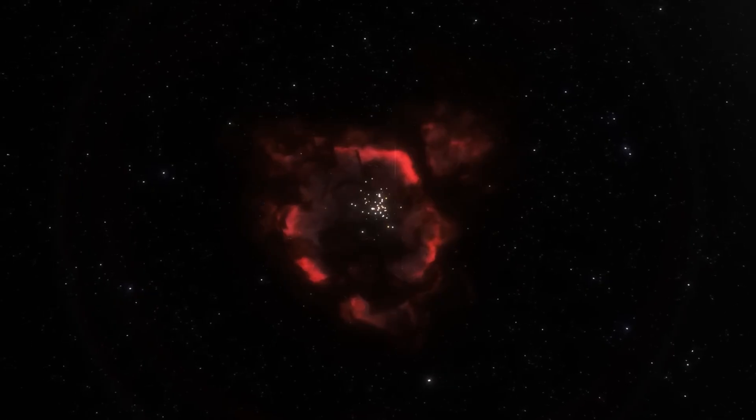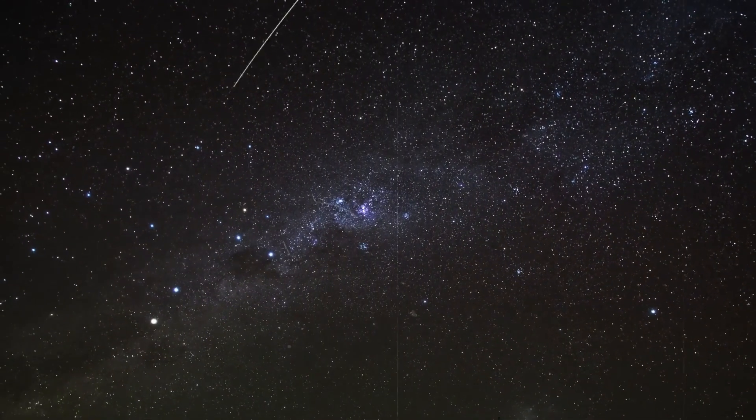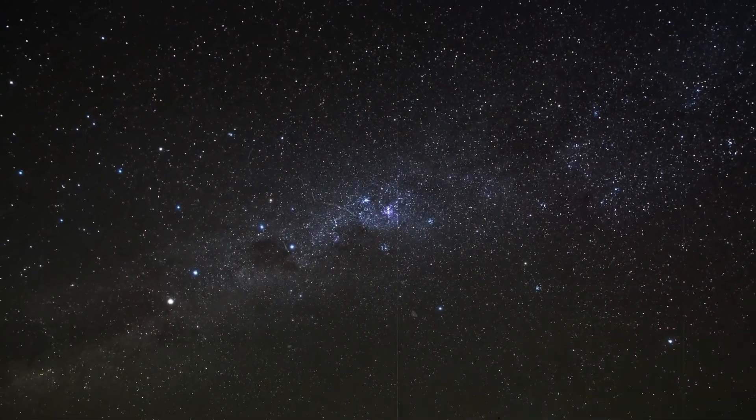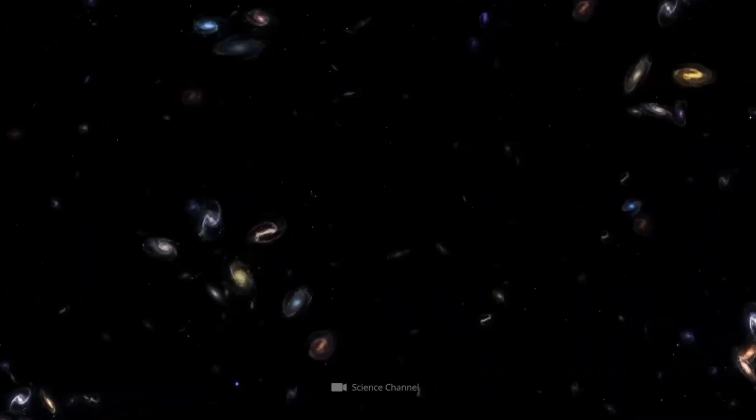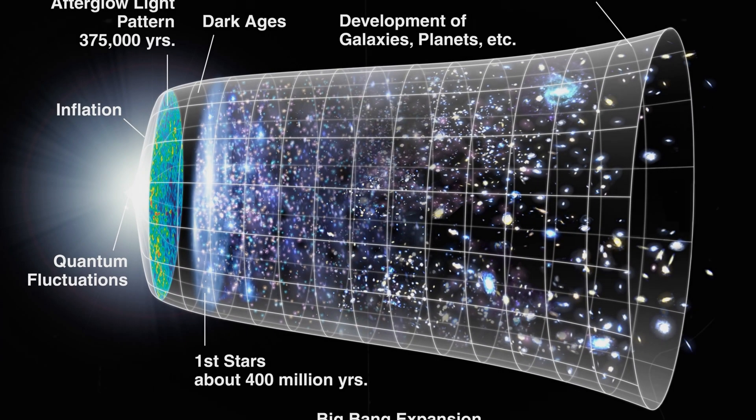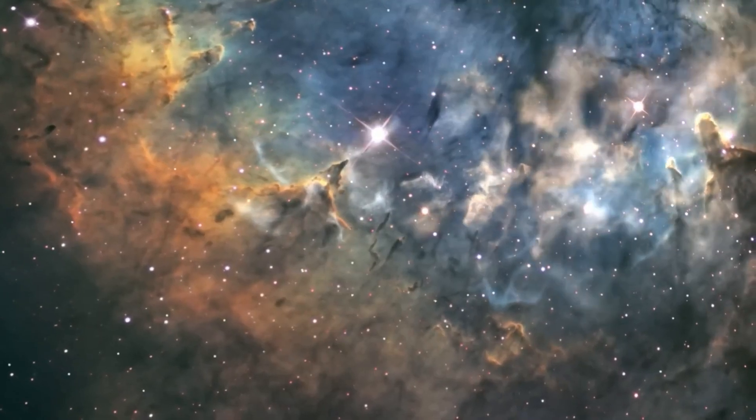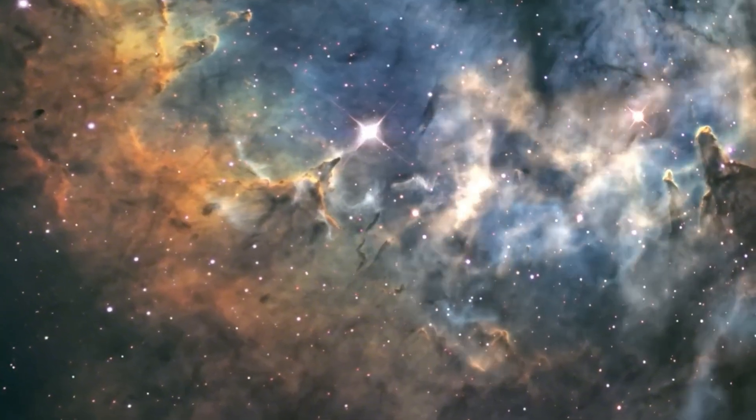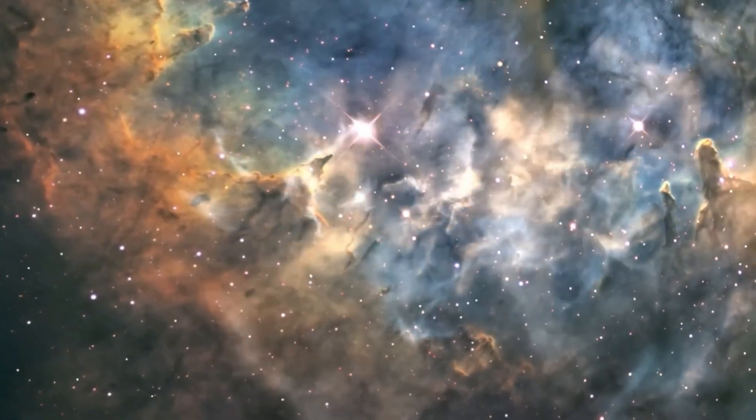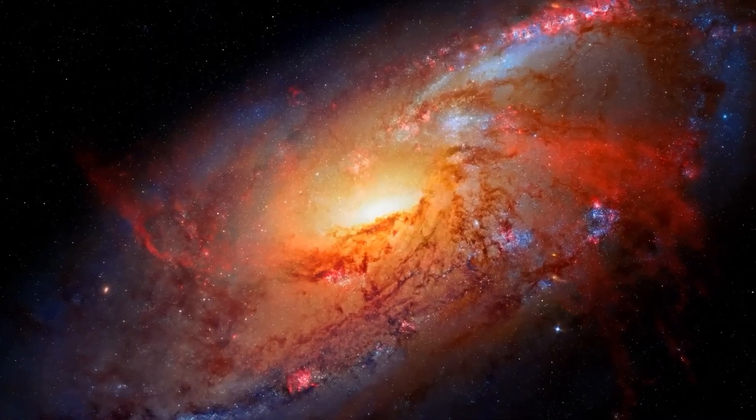Einstein's equations predicted that energy is stored in space itself. Even when you remove all matter, all radiation, and all particles, the vacuum still holds energy. The energy of geometry. The energy of the universe existing at all. When Webb detected that immense emptiness, it may have been seeing that background energy directly, the fabric of reality before light ever existed.